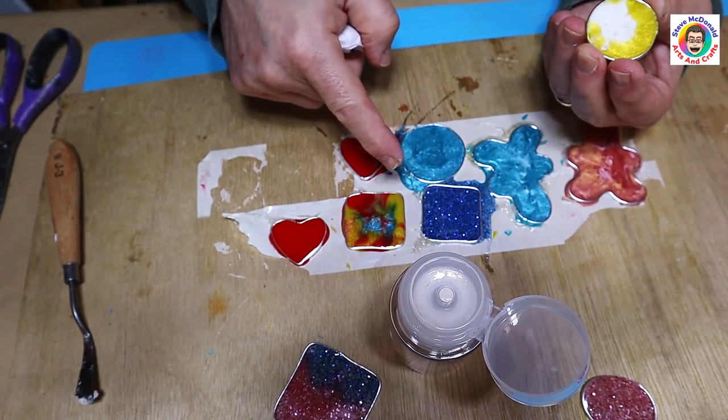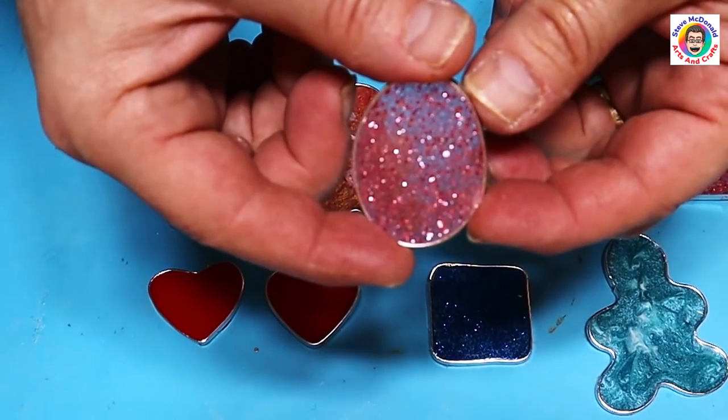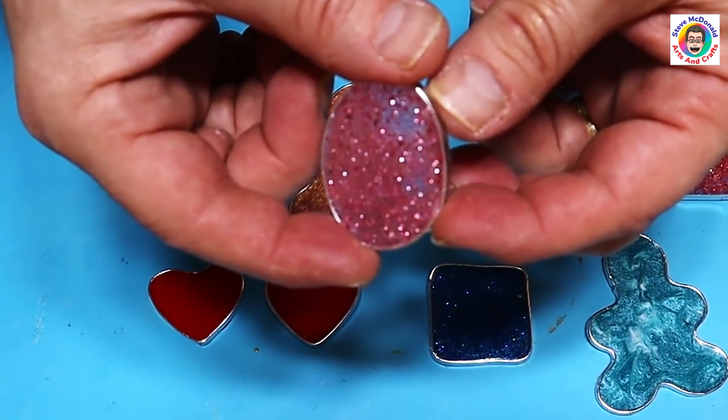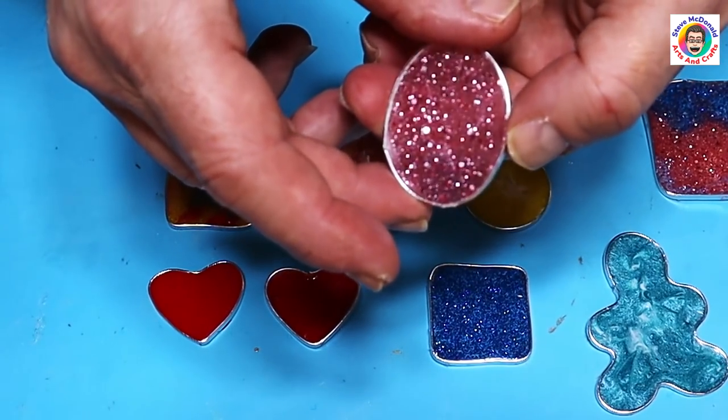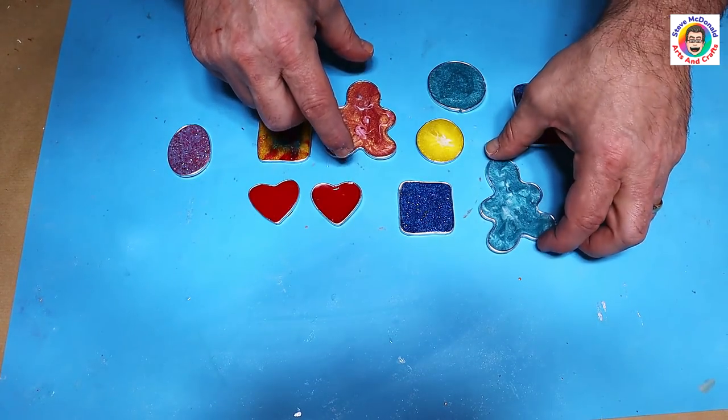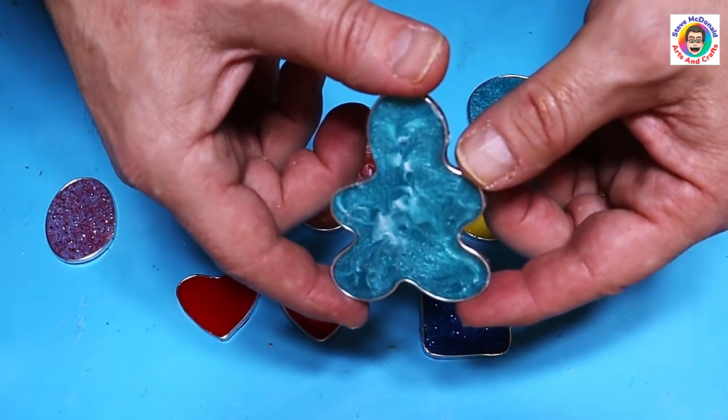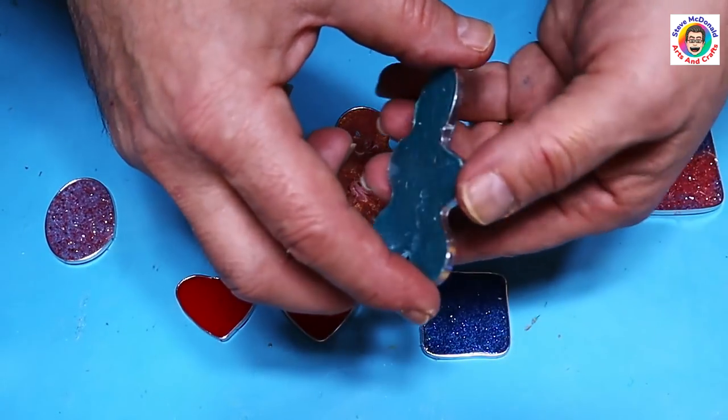So I'm going to go ahead and pull the rest of these off. I love the way that the one with the glitter in has come out. It's got that translucent look to it, both back and the front. This is the advantage of making your own bezels. You can do them in any shape. I think the bear is really cute.